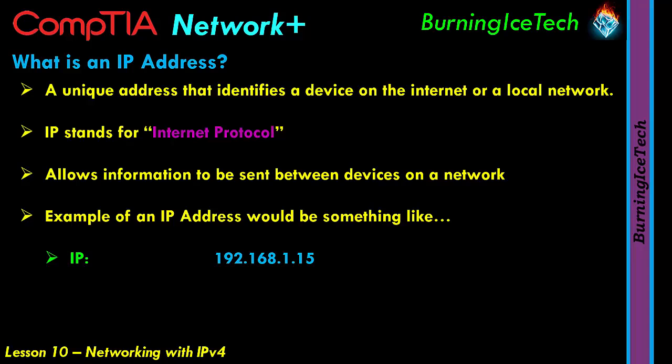That IP address consists of four octets. So 192 is the first octet, 168 is the second, 1 is the third, and 15 is the fourth octet. If you look at IP version 6 — which is not the topic here — it's going to look completely different and far more complex.